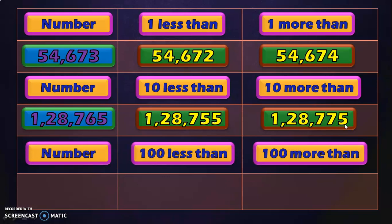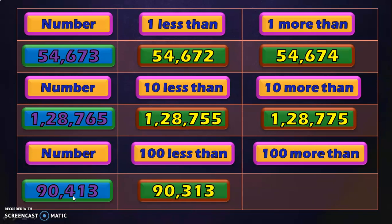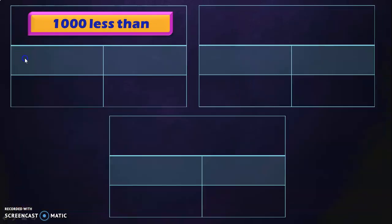Next, we are going to do 100 less than and 100 more than the given number, which means we look at the 100's place and subtract or add 1 to the digit there. The number is 90,413. In the 100's place we have the digit 4. So 100 less than 90,413 is 90,313 (because 4 minus 1 is 3), and 100 more than 90,413 is 90,513 (because we add 1 to the digit in the 100's place).